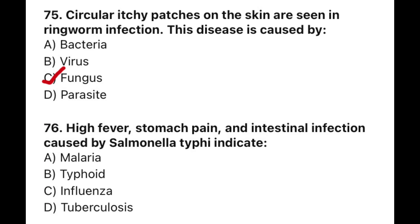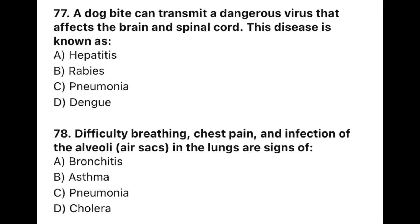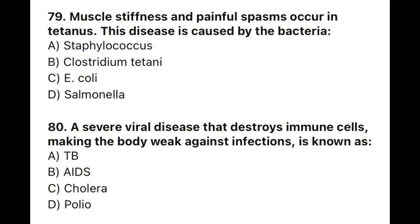Question 76: High fever, stomach pain, and intestinal infection caused by Salmonella typhi indicates — the correct option is B — typhoid. Question 77: A dog bite can transmit a dangerous virus that affects the brain and spinal cord. This disease is known as — the correct option is B — rabies. Question 78: Difficulty breathing, chest pain, and infection of the alveoli (air sacs) in the lungs are signs of — the correct option is C — pneumonia. Question 79: Muscle stiffness and painful spasms occur in tetanus. This disease is caused by the bacteria — the correct option is B — Clostridium tetani. Question 80: A severe viral disease that destroys immune cells, making the body weak against infections, is known as — the correct option is B — HIV/AIDS (Acquired Immunodeficiency Syndrome).